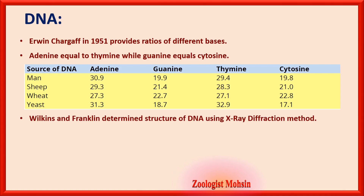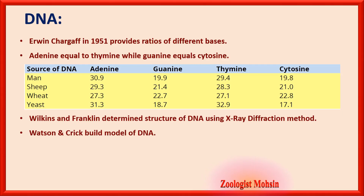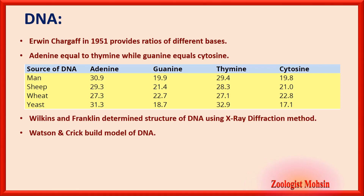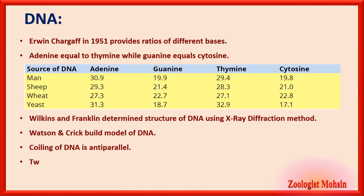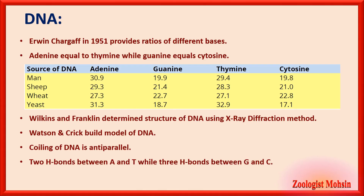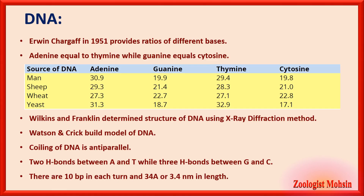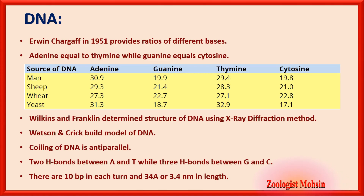Wilkins and Franklin determined the structure of DNA using the X-ray diffraction method. Watson and Crick built the model of DNA — remember the difference: structure was discovered by Wilkins and Franklin, while the model was built by Watson and Crick. The coiling of DNA is antiparallel: one strand runs top to bottom and the other from bottom to top. Two hydrogen bonds form between adenine and thymine; three hydrogen bonds form between guanine and cytosine. There are 10 base pairs per turn, and each turn is 3.4 nanometers in length.